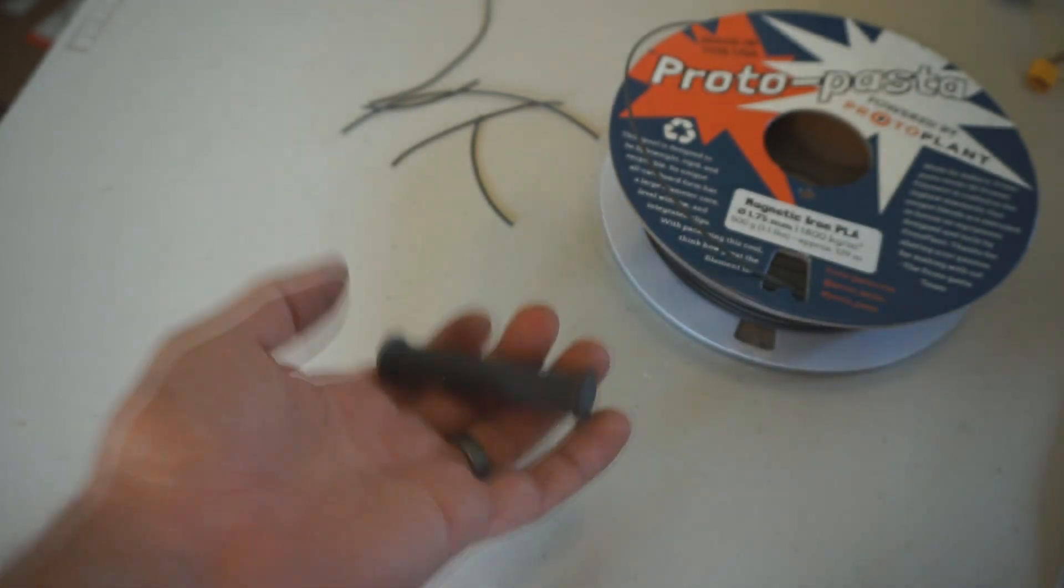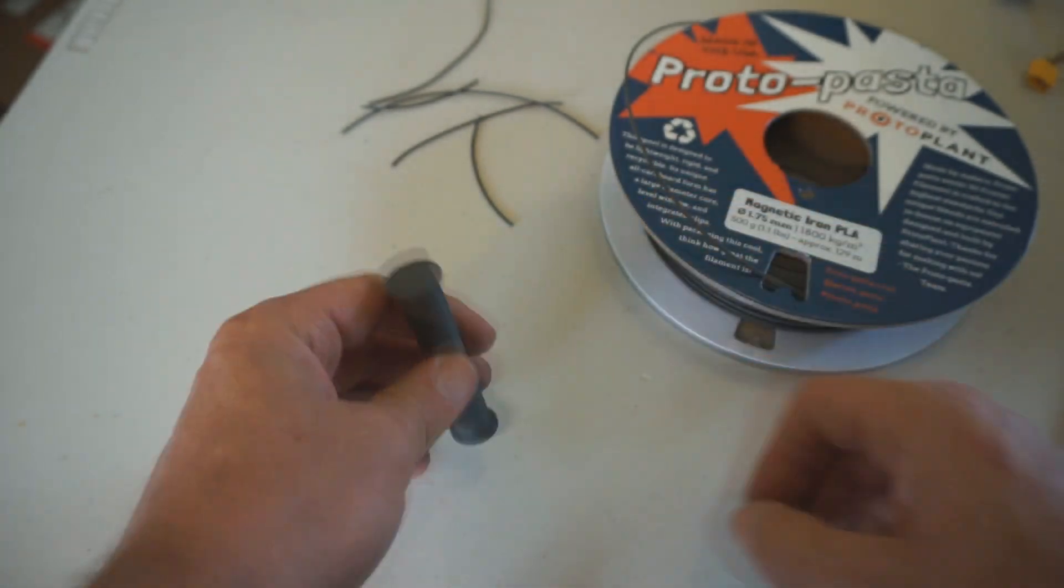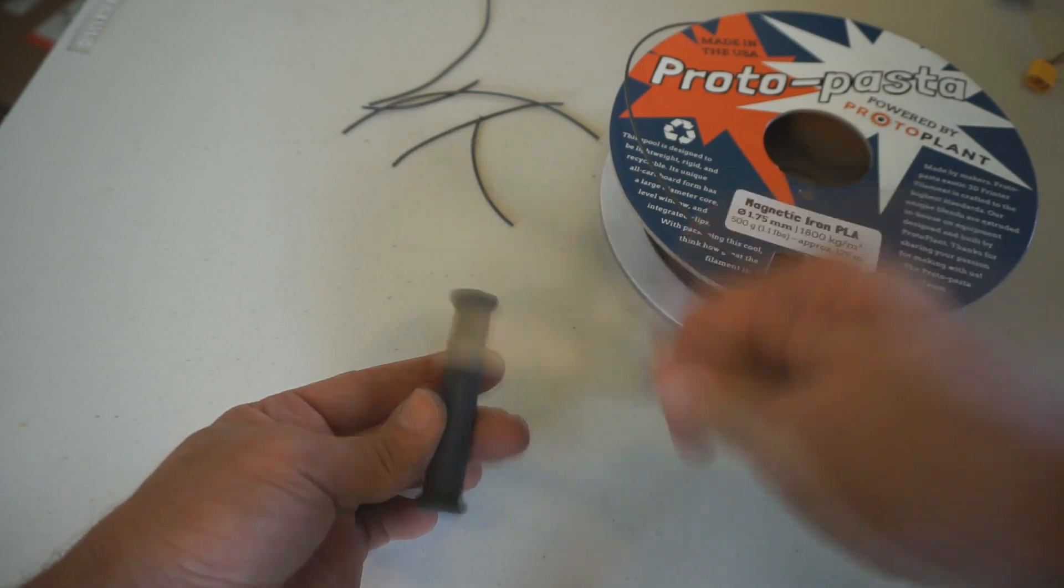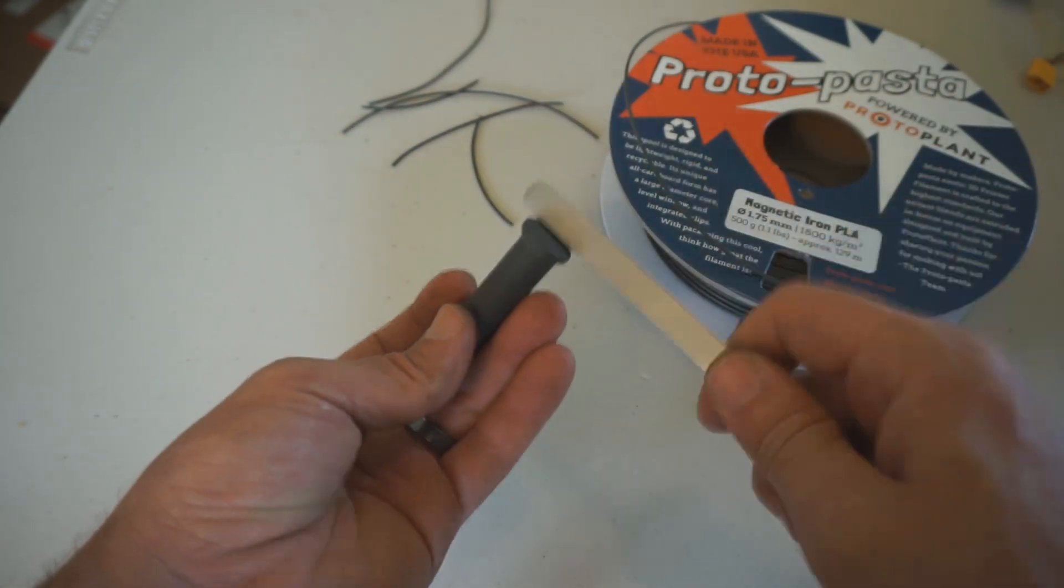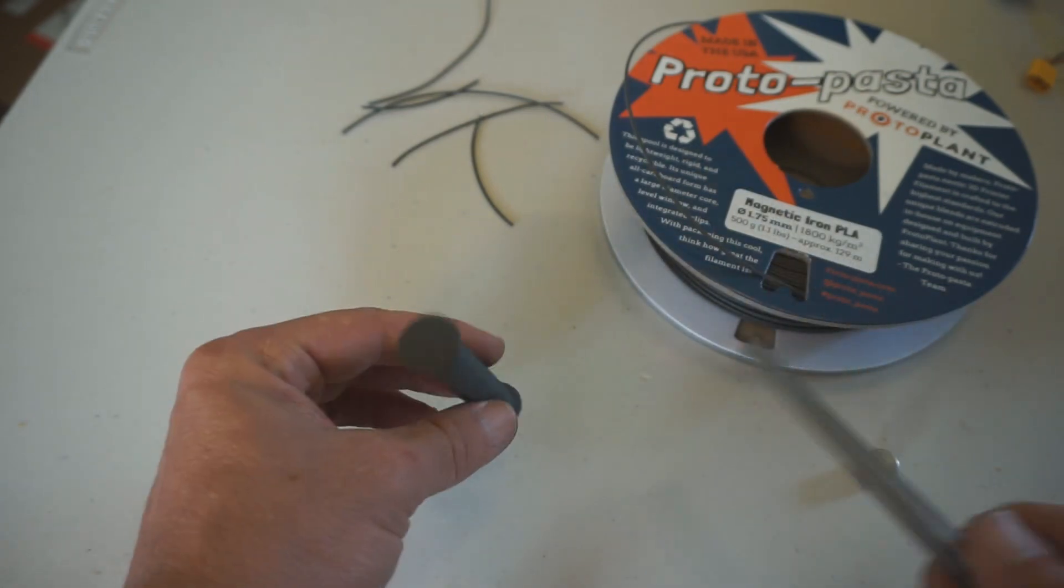You can also notice that it's a lot heavier than a regular PLA or ABS printed part. It also sounds like a cross between metal and plastic, which is pretty much exactly what it is.